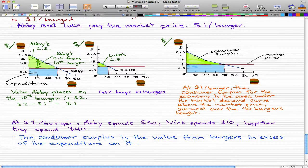So that's what I mean when I say that the consumer surplus is the value from burgers in excess of the expenditure on it. Because our expenditure is the blue highlighted part, and our consumer surplus is this green triangle, which is the value in excess of the blue triangle, which is the expenditure. And you can see that I have labeled this blue rectangle expenditure, labeled the green as consumer surplus, and labeled the red line as the market price.